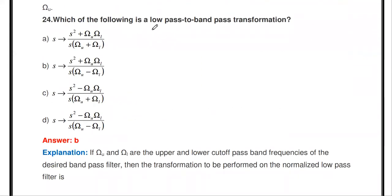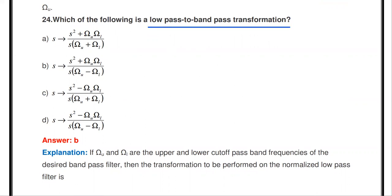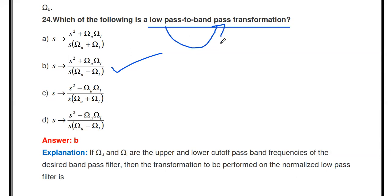Which is the low-pass to band-pass transformation? Replace S by (S² + omega_U * omega_L) divided by (S * (omega_U − omega_L)). If you replace variable S with this term in the analog low-pass filter transfer function, it is converted into a band-pass filter, where omega_U is the upper cutoff frequency and omega_L is the lower cutoff frequency.